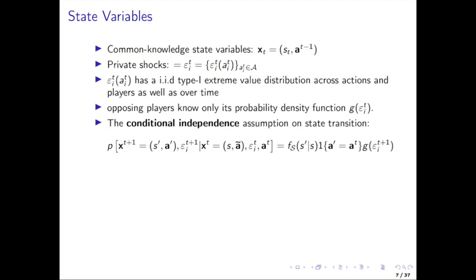In Aguirregabiria and Mira's empirical application, they actually work with normally distributed errors and also some observed heterogeneity — a discretized normal. You can work with normal distribution with binary choices. If you have multinomial choices, you're pretty much stuck with the IID extreme value distribution, unless you want to calculate the expected max and integrate over all the epsilons when calculating the choice probabilities. The opposing players know only the probability density function of the epsilons, but do know the realization of their own shock.